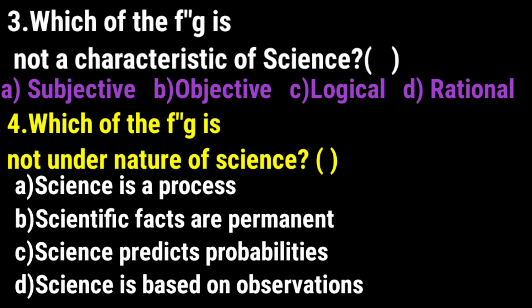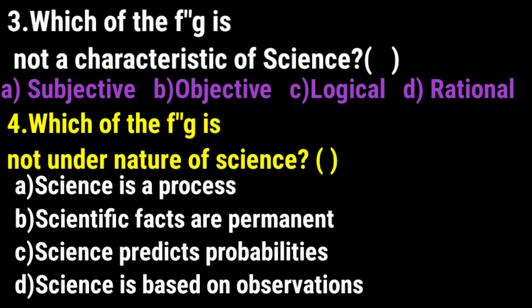Which of the following is not a characteristic of science? Science is objective, logical, rational — but not subjective. Therefore, the answer is 'subjective'.